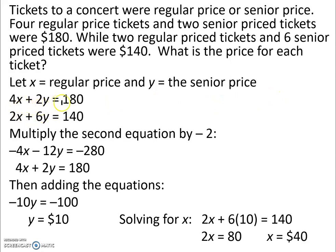Then we can have two equations, 4x plus 2y equals 180. And that was from up in our verbiage up here in our problem. Four regular price tickets which is our 4x and two senior price tickets which is our 2y equals $180. Continuing on with the information we're given, while two regular price tickets which is 2x and six senior price tickets 6y were $140. So now we have our two equations.